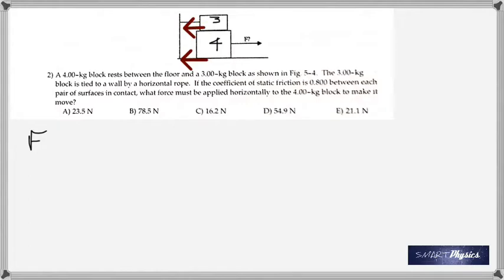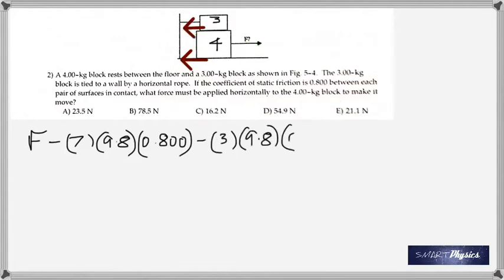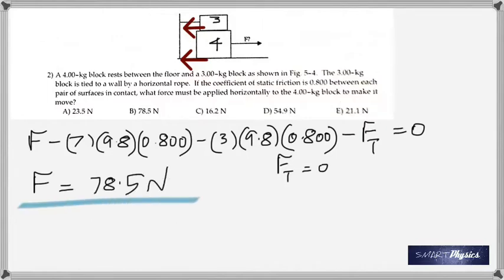And so the only force that's acting against the applied force is the friction here, which would be 4 plus 3, 7 times 9.8 times mu. Because there's 7 kilograms acting here. And you've got to take mg, so it's 7 times 9.8 times mu. And then the friction here is 3 times 9.8 times mu. So that's the force that you've got to apply. So F minus the two friction forces minus the tension equal to 0. But the tension is 0 here because it's just beginning to move. So when you do the calculation, you get 78.5 Newton. So it was not mathematically tough, but there is a conceptual crisis there.